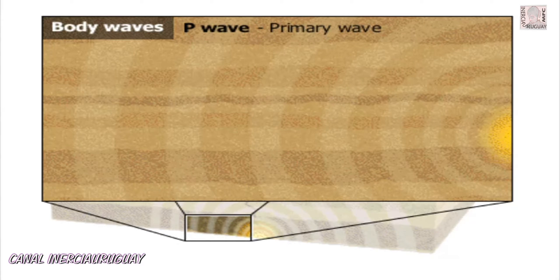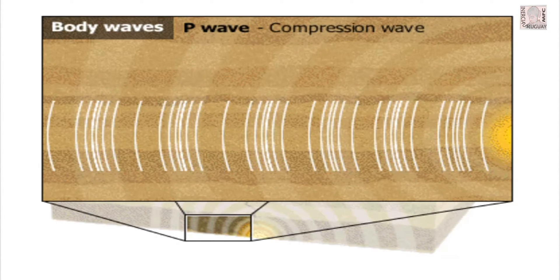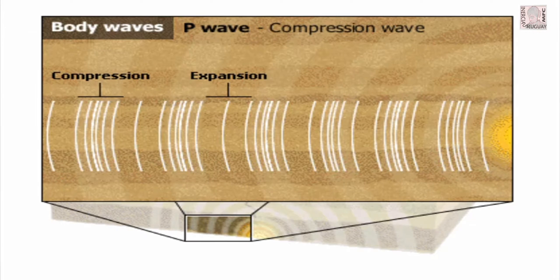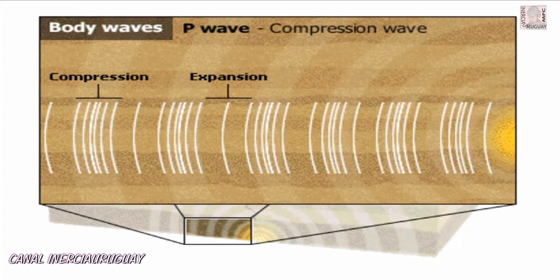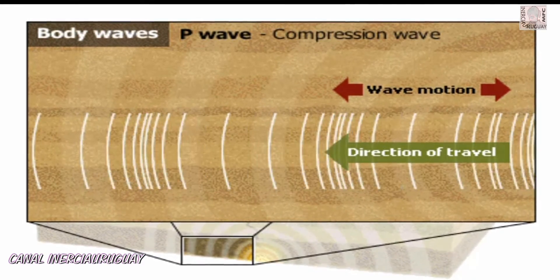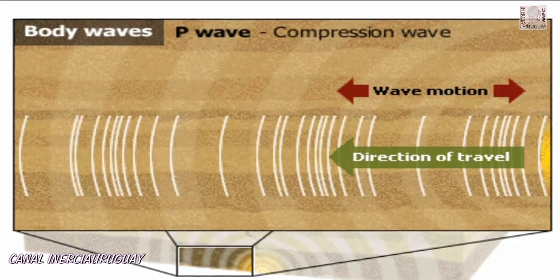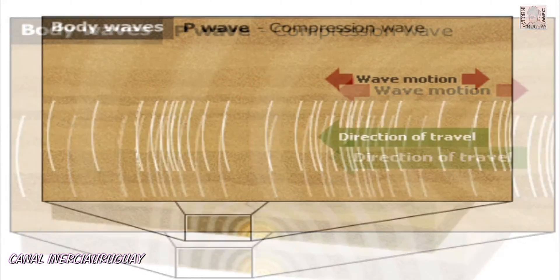The fastest wave is called a P wave or primary wave. It moves between 4 and 7 km per second depending on the density of the rock it's moving through. A P wave is a compression type wave. Rocky material in its direction of travel compresses then expands as the wave passes. A P wave is similar to a wave travelling through a spring — the coils compress and expand in the direction the wave is travelling.